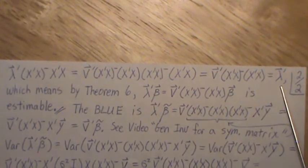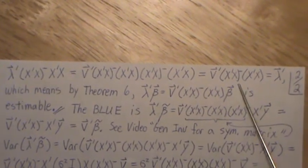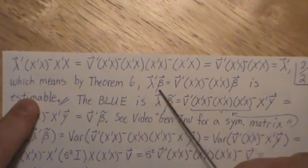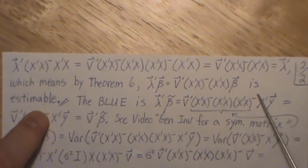Those just get carried over. Well, this was what we're calling lambda. V, you know, this. And so it is estimable, which means by theorem six, this linear combination is estimable.